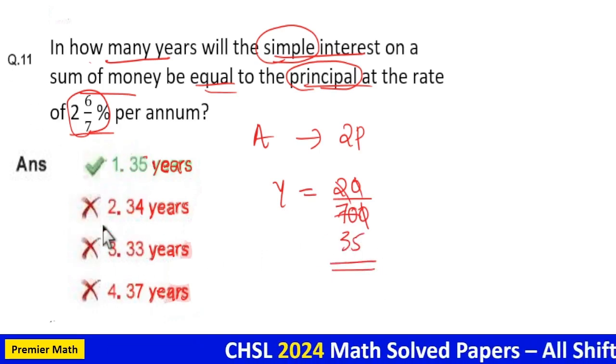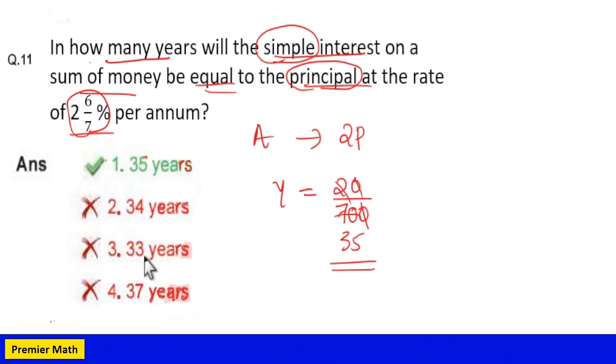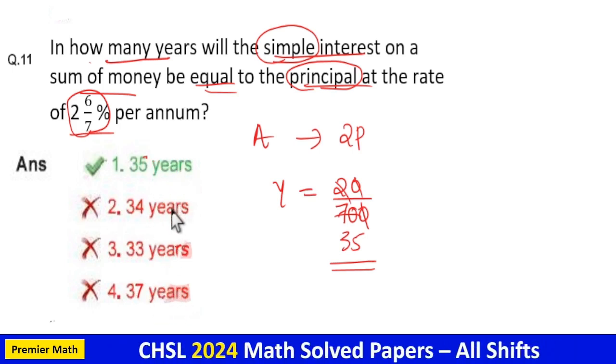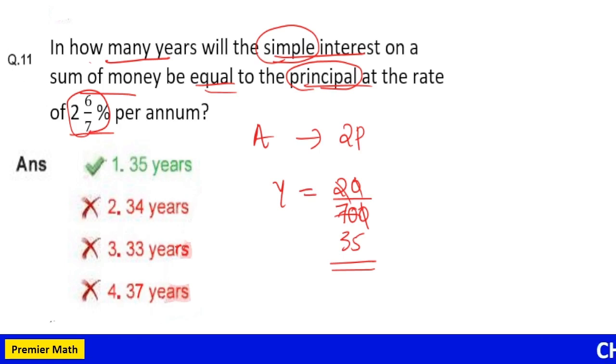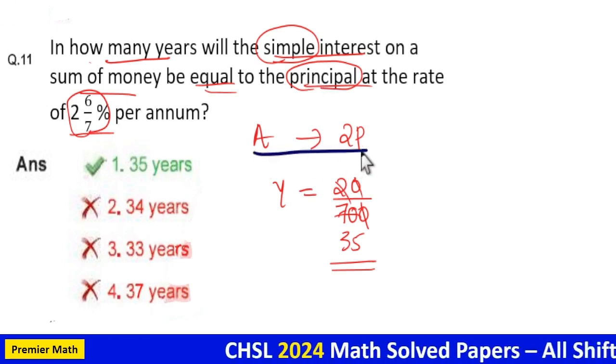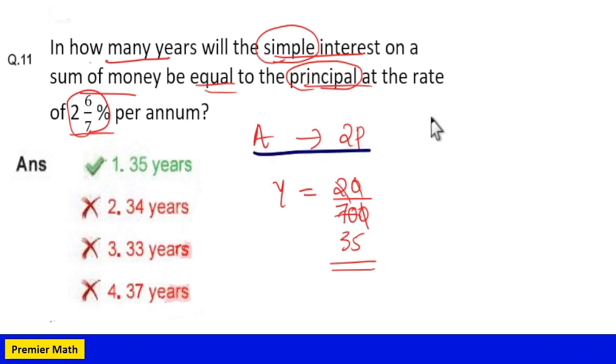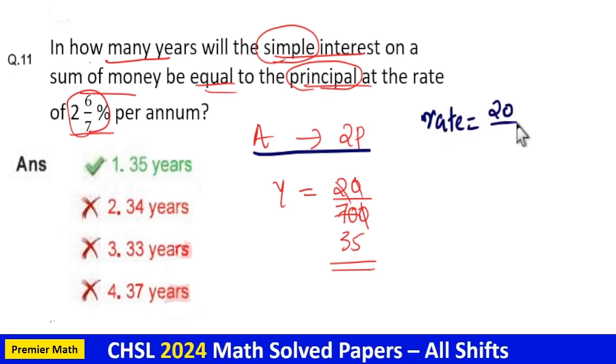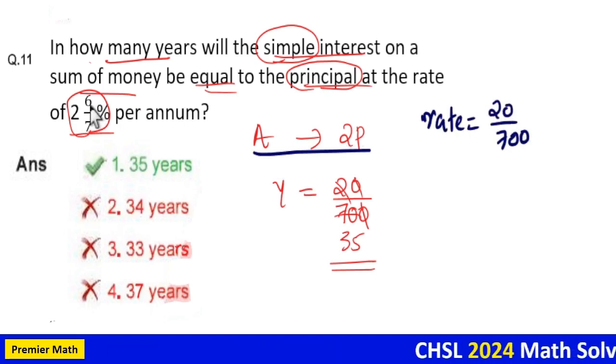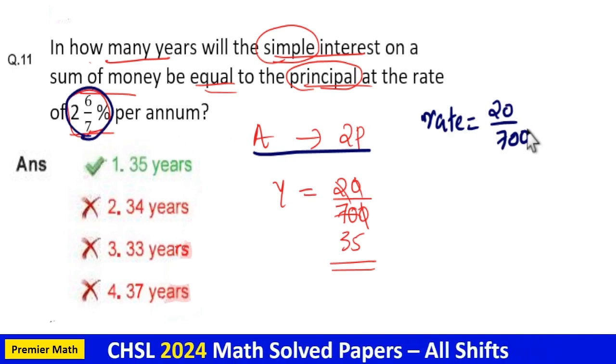Whenever you have a question relating to simple interest or whenever question says amount is 2 times the principal then take the rate. Here rate is equal to 20 by 7 percentage.